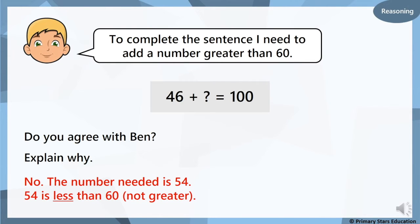Okay. Ben is actually wrong. The number that he needs to add to make 100 is 54. And as we know, 54 is less than 60. It's not greater.